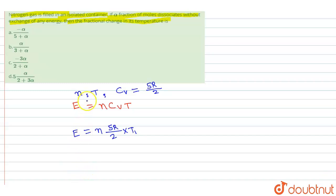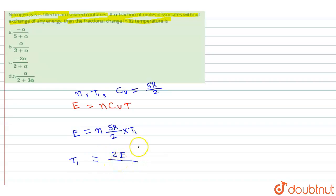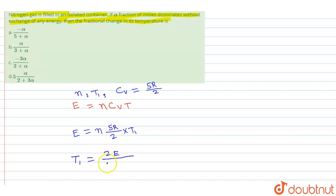From here, the initial temperature T1 can be written as T1 = 2E / (5NR).